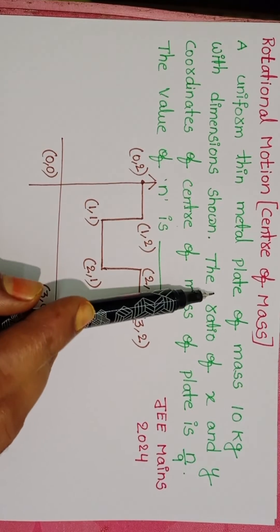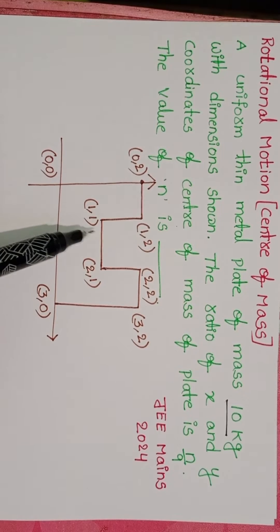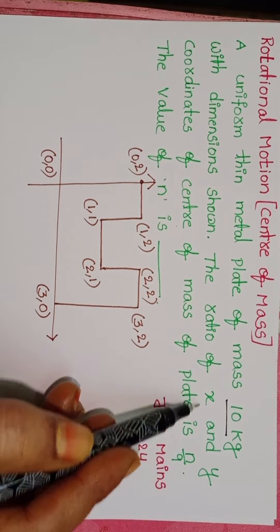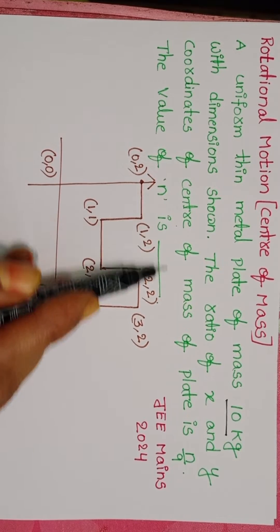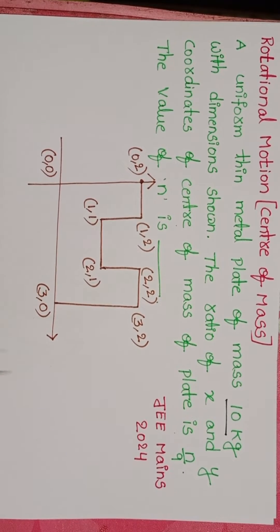A uniform thin metal plate of mass 10 kg with dimensions shown in the figure. The ratio of x and y coordinates of the center of mass of the plate is n by 9. The value of n is...